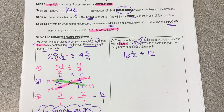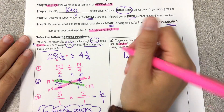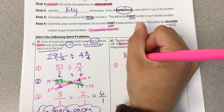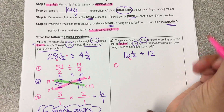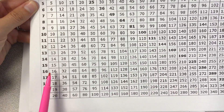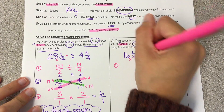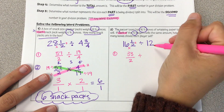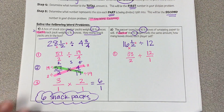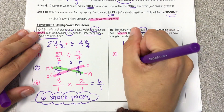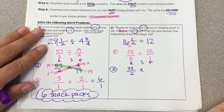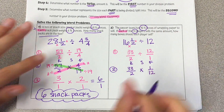Step one, rewriting: 16½ divided by 12. 16 times 2 is 32, plus 1 is 33, so 33 over 2. Writing 12 as 12 over 1. Step two: keep, switch, flip — keeping 33 over 2, switching from division to multiplication, flipping 12 over 1 to 1 over 12.